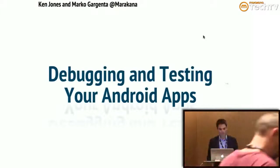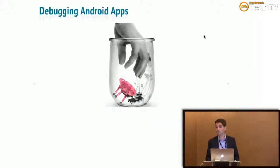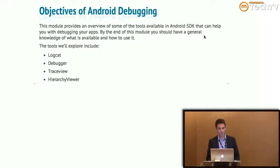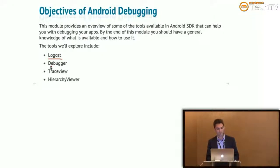Today we're going to talk about two things: debugging and testing. Starting with debugging, we'll look at a couple of tools that are part of the SDK — so you all have them, they're free and already there. LogCat is one of them, the debugger is another, TraceView is another, and then Hierarchy Viewer.